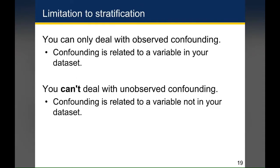One of the limitations to stratification is that you can only deal with observed confounding, which refers to confounding related to a variable in your data set. You can't deal with unobserved confounding using stratification alone. Unobserved confounding refers to confounding related to a variable outside of your data set. For example, in the question of whether starting a diet results in weight loss, many factors — like increased exercise, increased motivation, or other things someone might be doing to lose weight — won't be in the data set, putting you at risk of having unobserved confounding that gives a false picture of the relationship between starting a diet and losing weight.